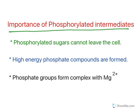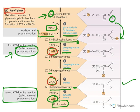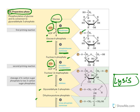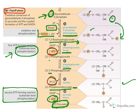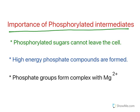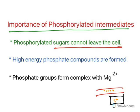The last topic is the importance of phosphorylated intermediates. In glycolysis, all intermediate compounds between glucose and pyruvate are phosphate derivatives — phosphate groups are present everywhere in the pathway. The first importance: phosphorylated sugars cannot leave the cell. Once glucose enters a cell from the blood and is phosphorylated, it is trapped inside because the phosphate carries a negative charge that prevents it from crossing the membrane. This traps glucose and ensures glycolysis proceeds to completion.